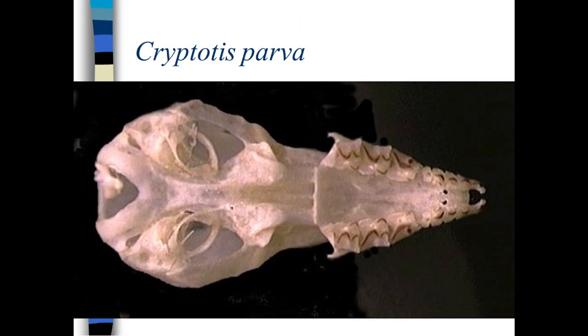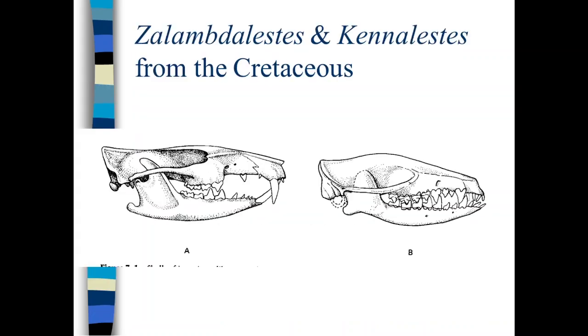Cryptotis parva, that's another shrew that we have here in North America. In Missouri, actually, this is the least shrew, and it is the smallest mammal in North America, excluding some of the bats. So it's the smallest terrestrial mammal. We did make a point about the shape of the skull. And this is true for all of the insectivores. If you look at the line that's formed by the top of the skull and the bottom of the dentary bone, those two lines appear to be parallel. So it's almost as though the skulls are this nice sort of tubular shape.